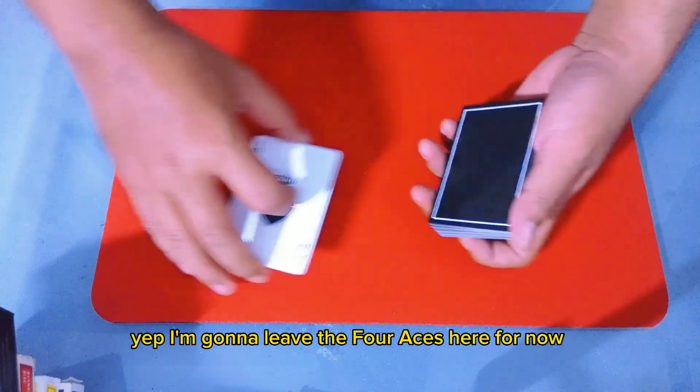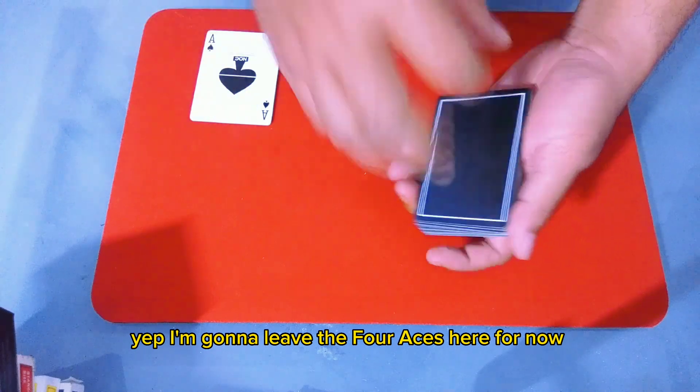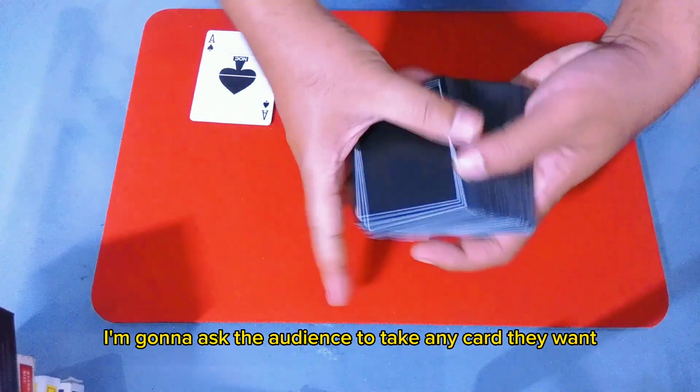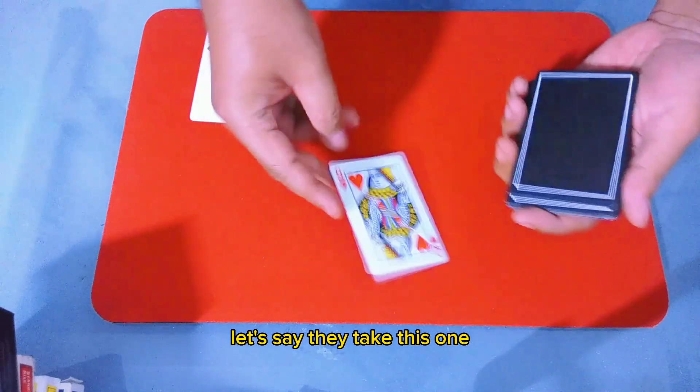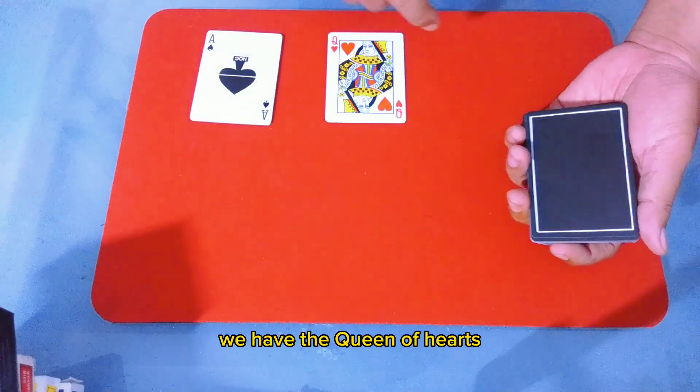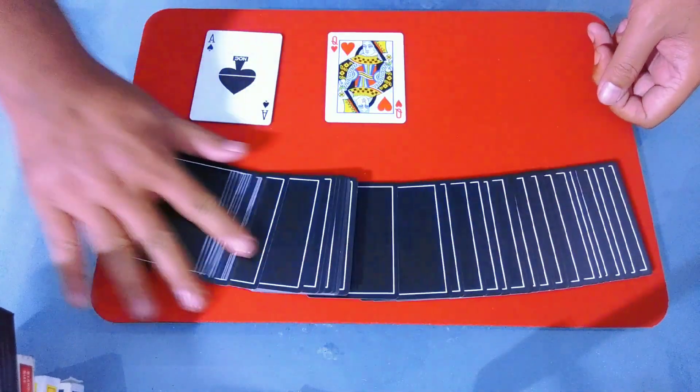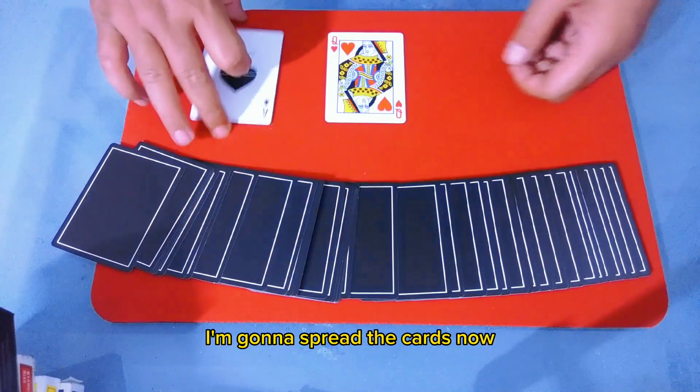I'm gonna leave the four aces here for now. Now I'm gonna ask the audience to take any card they want. Let's say they take this one - we have the Queen of Hearts. I'm gonna spread the cards.